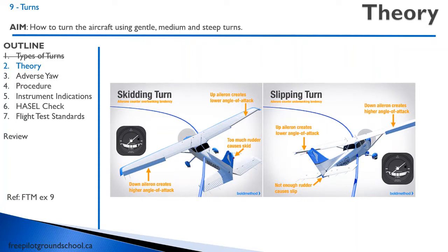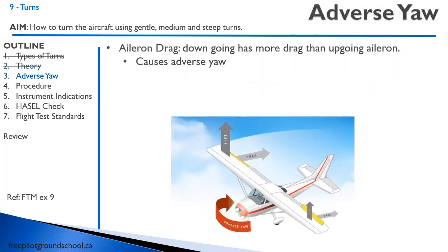You can also have skidding and slipping turns. In a skidding turn, the ball on your turn coordinator is to the right, meaning you are applying too much rudder — the equivalent of riding a bicycle and falling away from your turn. You can also have a slip if the ball is to the inside of the turn. These images are from Bold Method — check out their website and YouTube channel.